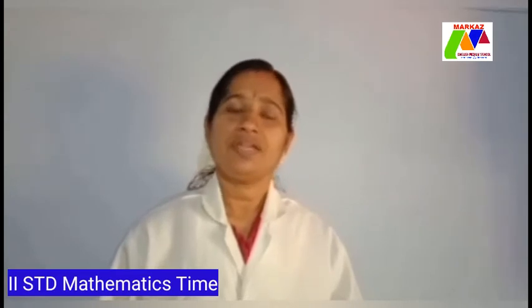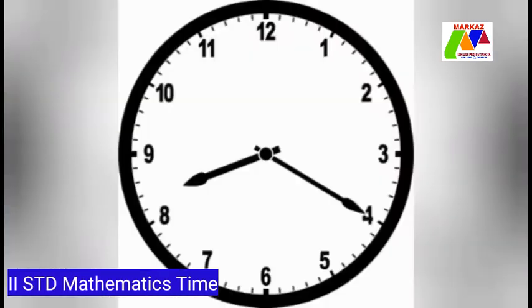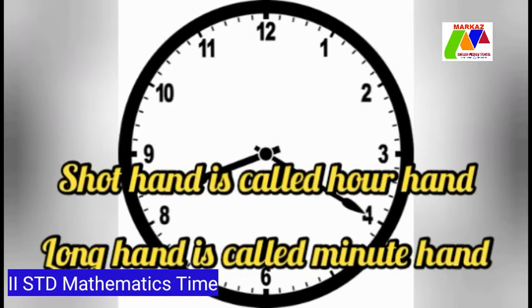Students, we know time is very important for everyone of us. We use clocks to know the time. Now look at this clock. The flat surface is called the face of the clock. The numbers 1 to 12 appear on the face. It has two hands.